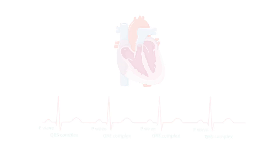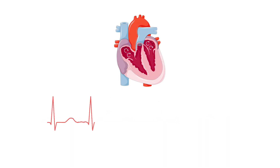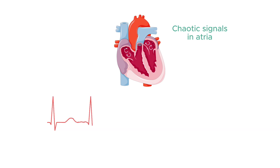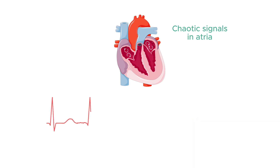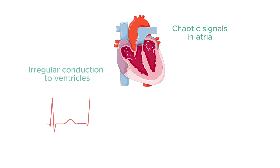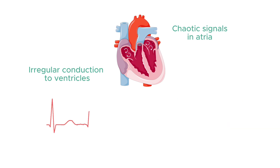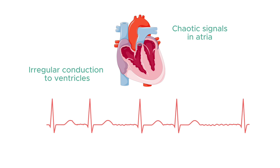In contrast, in atrial fibrillation, there are chaotic electrical signals generated in the atria and the pulmonary veins, which cause fibrillation or tremoring of the atria. They no longer beat in any coordinated fashion, and hence do not contribute to ventricular filling significantly. When these chaotic signals reach the AV node, the node transmits them intermittently to the ventricles, such that the ventricles contract irregularly.